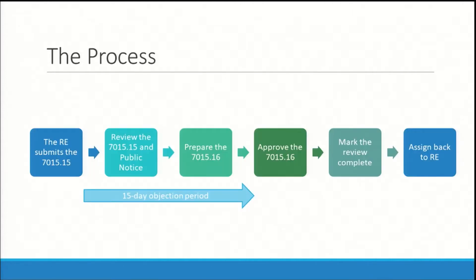The 7015-16 process on the HUD side begins when the RE submits the 7015-15 electronically via HEROES to the local field office. The HUD Field Office reviews the 7015-15 and required public notice. The 7015-16 is prepared by HUD staff, and when the objection period expires, the 7015-16 is certified by the HUD authorizing official. The review is then marked complete and assigned back to the responsible entity.